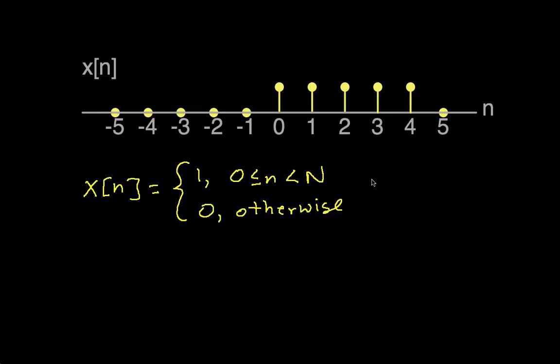And so our goal is to compute the discrete time Fourier transform. And we'll do this by just basically starting with our formula for the discrete time Fourier transform and then simplifying things as we go. So our formula looks like this.